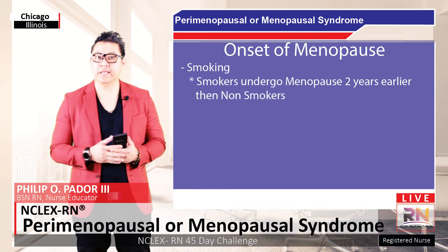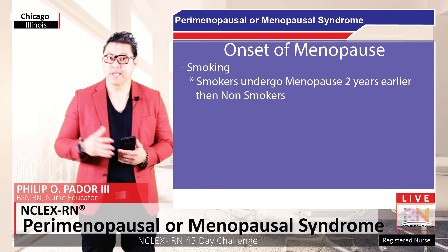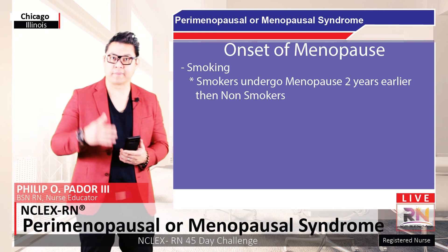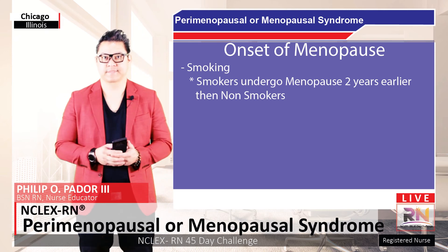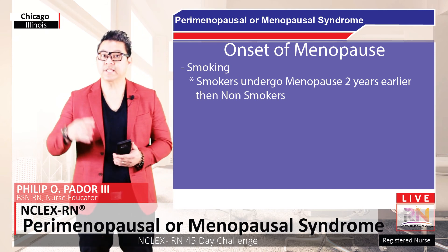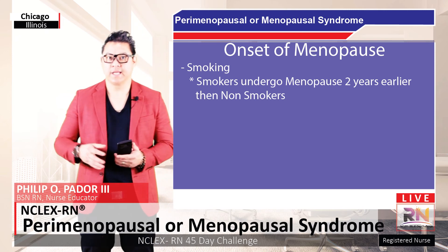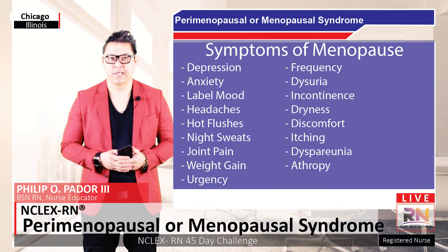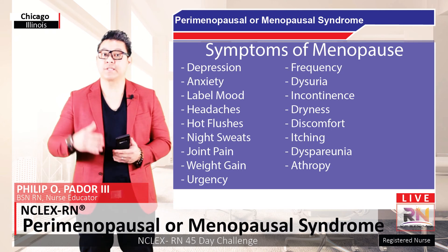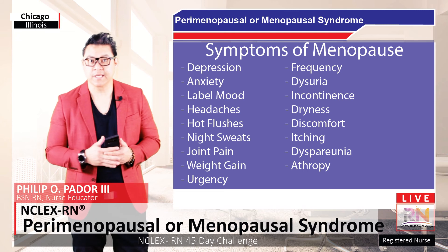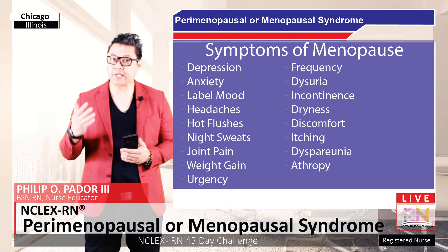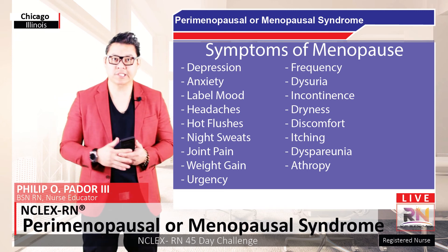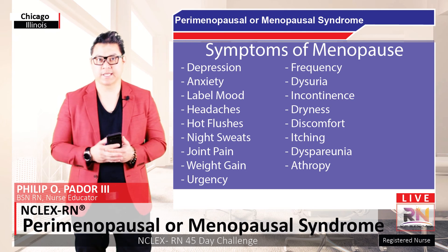Factors that can hasten the onset of menopause include smoking, which causes menopause to occur about two years earlier than in non-smokers. Neurological signs and symptoms of menopause include depression, anxiety, memory loss, mood changes, and headaches.